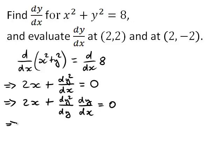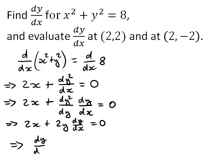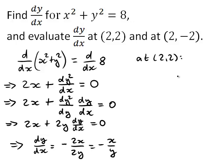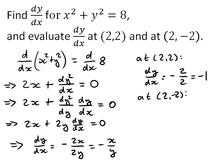This gives us 2x plus 2y times dy by dx is equal to 0. What we were after is dy by dx, so let's rearrange this equation. We get dy by dx equals negative 2x divided by 2y, or negative x divided by y. That's part one. For part two, at (2, 2): dy by dx equals negative 2 divided by 2, so that's negative 1. At (2, negative 2): dy by dx equals negative 2 divided by negative 2, so that comes to positive 1.